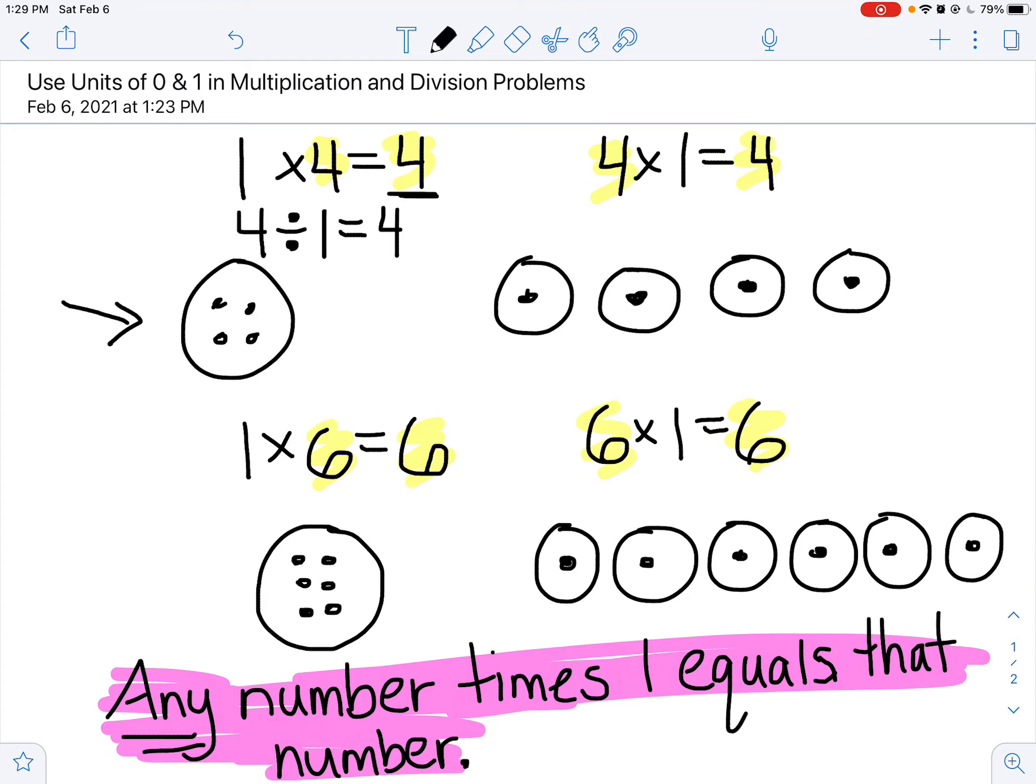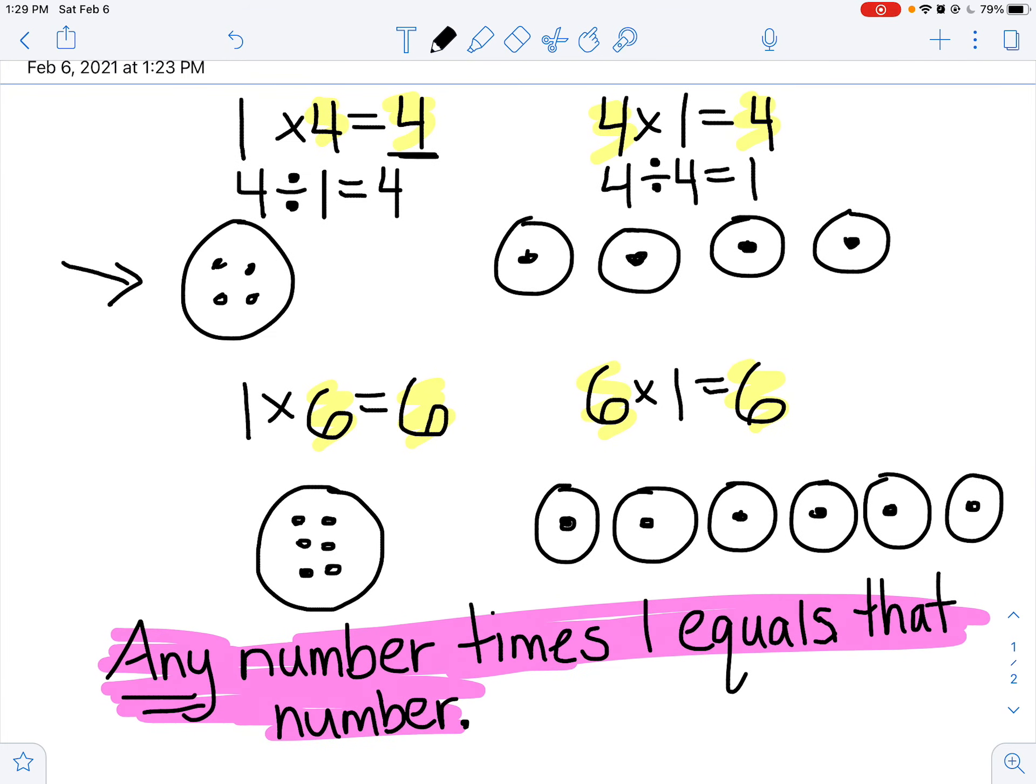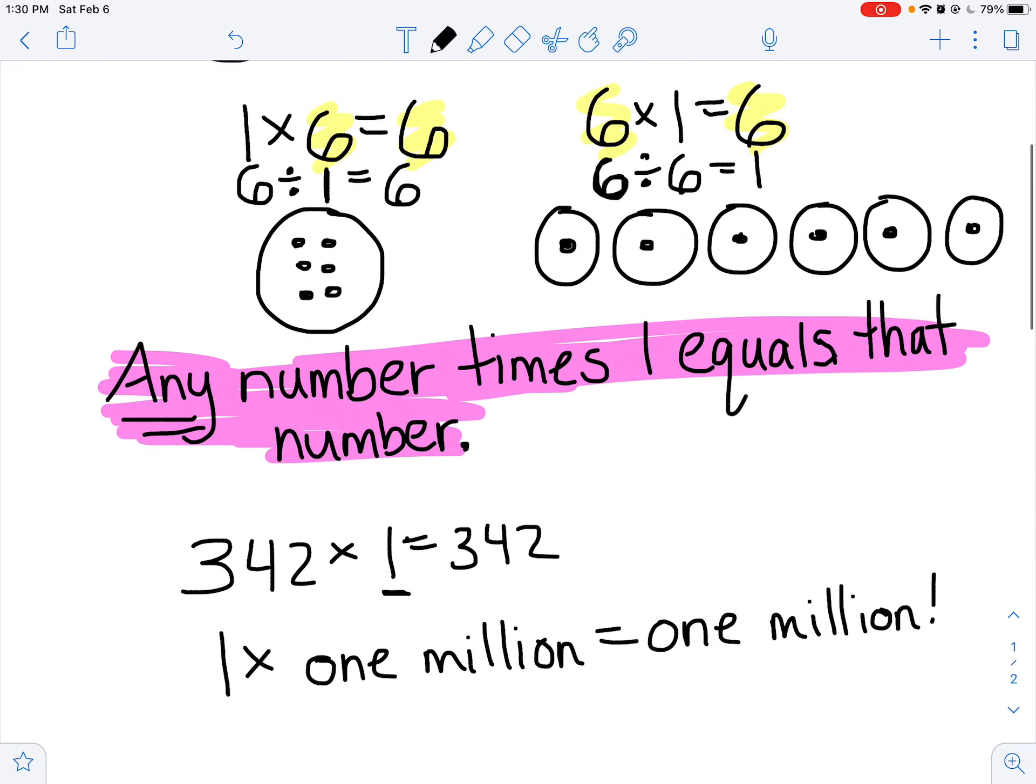Let's take a look at the model next to it. I still have 4 total items. This time I divided it into 4 equal groups. And how many went in each group? 1. See how that works? Let's take a look at the 6s. I have 6 total dots divided into 1 big group. That means that all 6 will be in that one group. In this case, I took 6 dots, divided them into 6 groups, and because there's 6 items in 6 groups, there must be 1 in each group. So that leads us to another important rule.